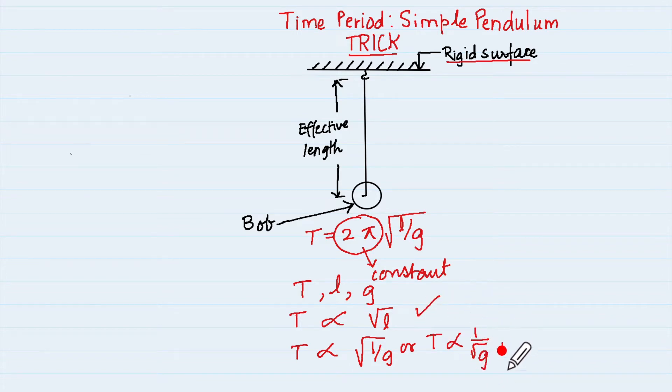So it is going to be under root 1 upon g or you can write it as t proportional to 1 upon root of g. Once you know this part and this part let us see how we are able to tackle the questions on time period.